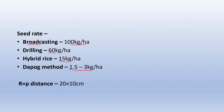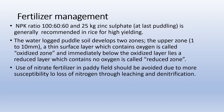For spacing in rice, row-to-row and plant-to-plant distance is 20 × 10 cm. Regarding fertilizer management: the NPK ratio recommended for rice cultivation is 100:60:60 kg per hectare. Also, 25 kg of zinc sulfate is generally recommended in rice for high yielding.